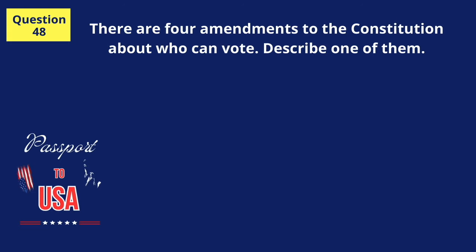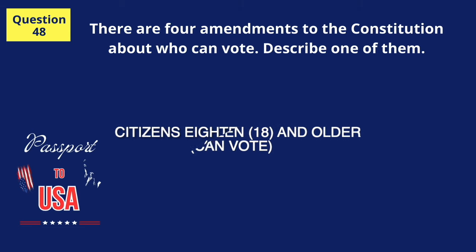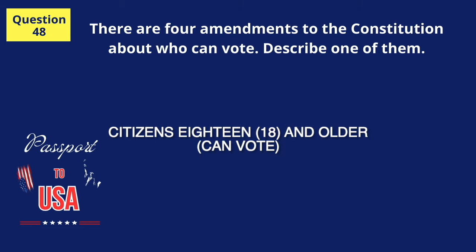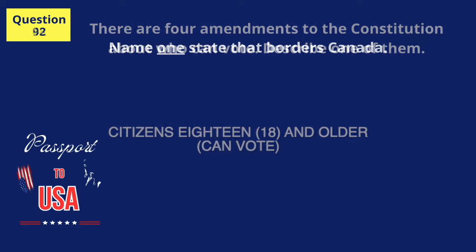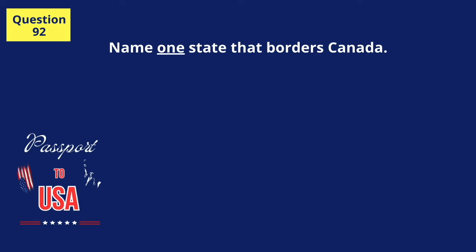There are four amendments to the Constitution about who can vote. Describe one of them. Citizens 18 and older can vote. Name one state that borders Canada. New York.